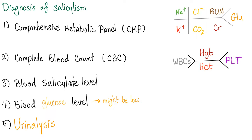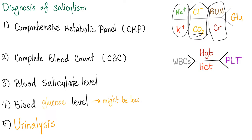Let's memorize the CMP. Sodium and potassium go together — they're kind of cousins. Then chloride and CO2. BUN and creatinine reflect kidney function. Glucose is about the pancreas and diabetes. So: two electrolytes, two C's, two kidney values, and one pancreas — because you have two kidneys and one pancreas.